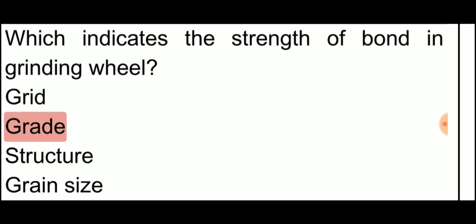Which indicates the strength of bond in grinding wheel? We just saw what A represents. In grinding wheel, what indicates the strength is grade.